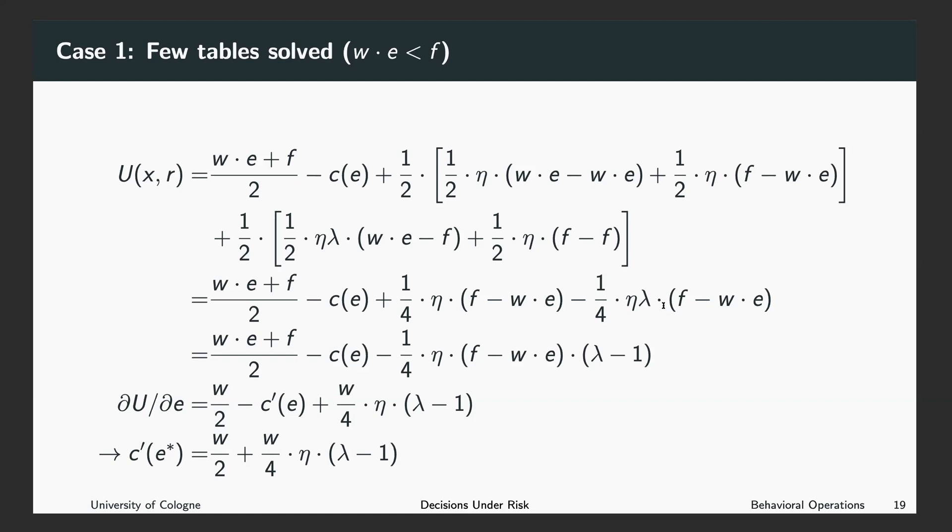However, also with probability one over four, we expected to get the fixed payment, but only received the piece rate. In this case, we are worse off and we suffer from this difference, which means this is multiplied by eta and lambda.